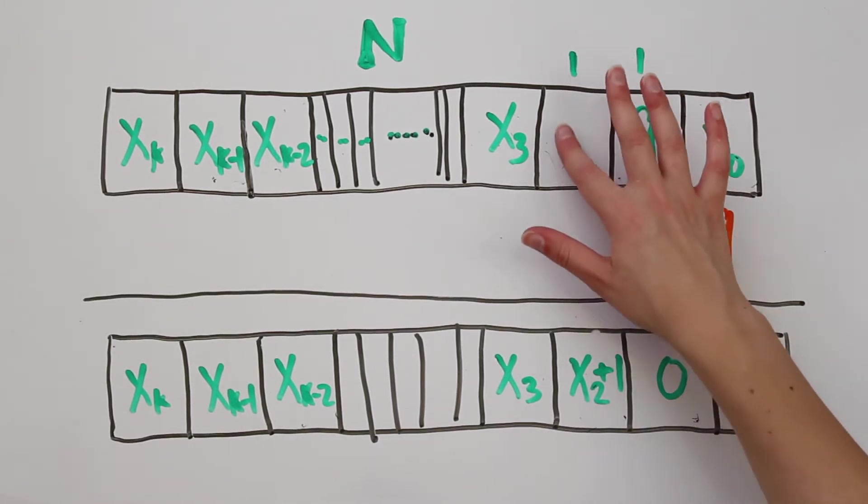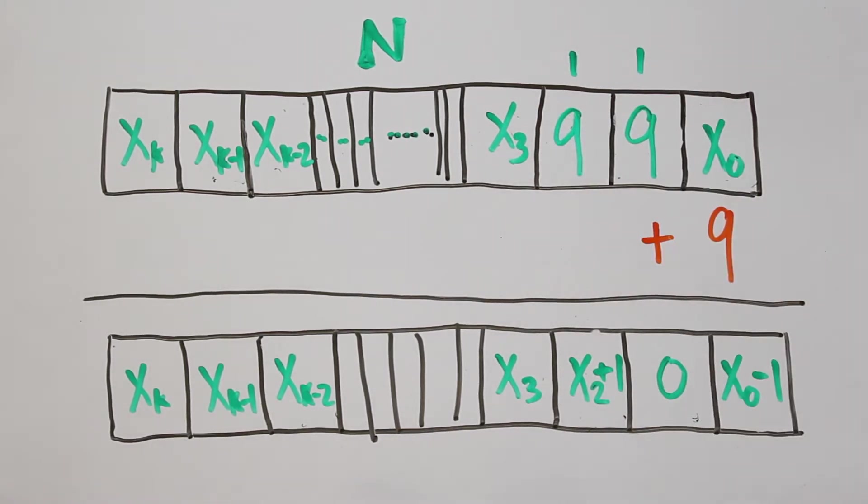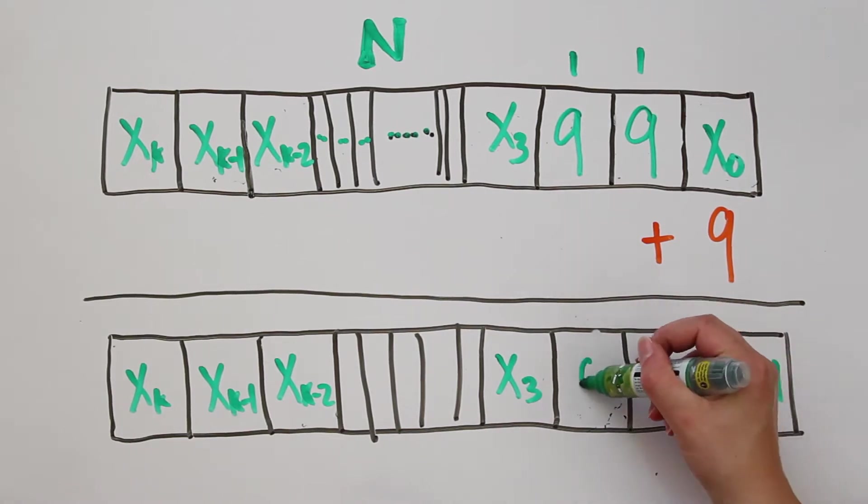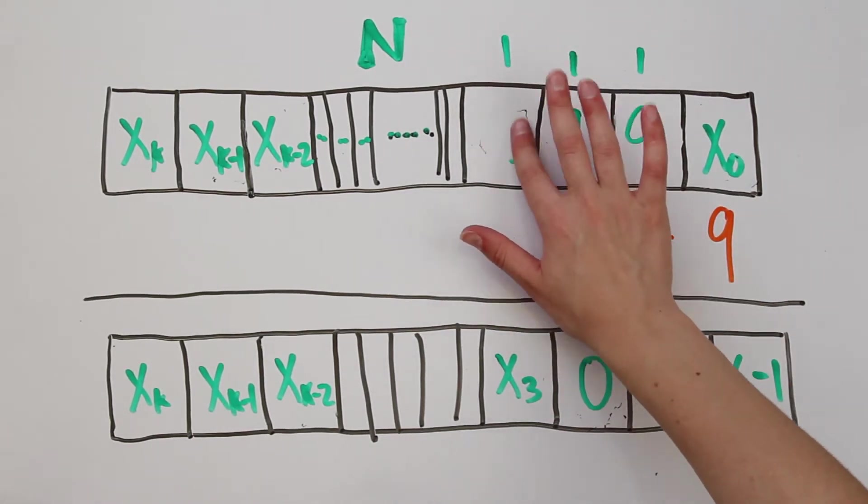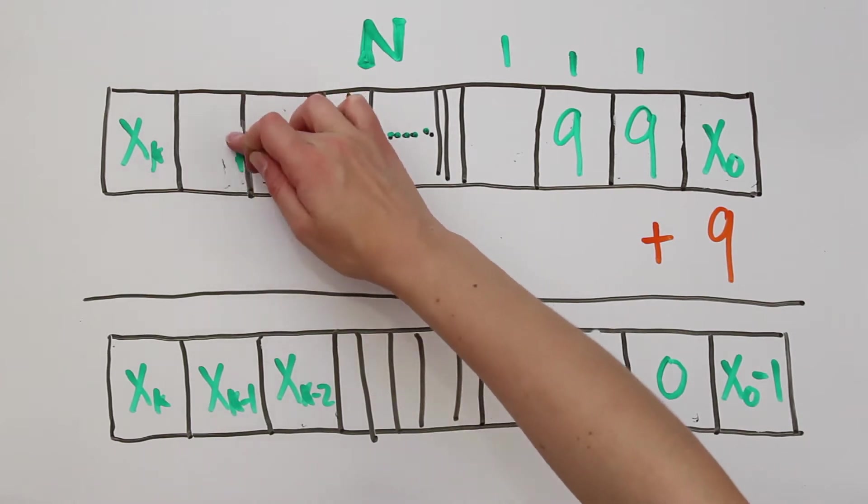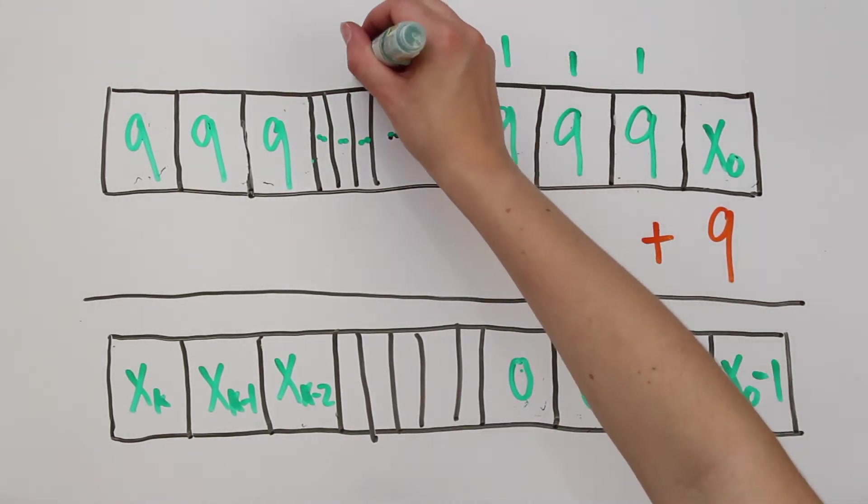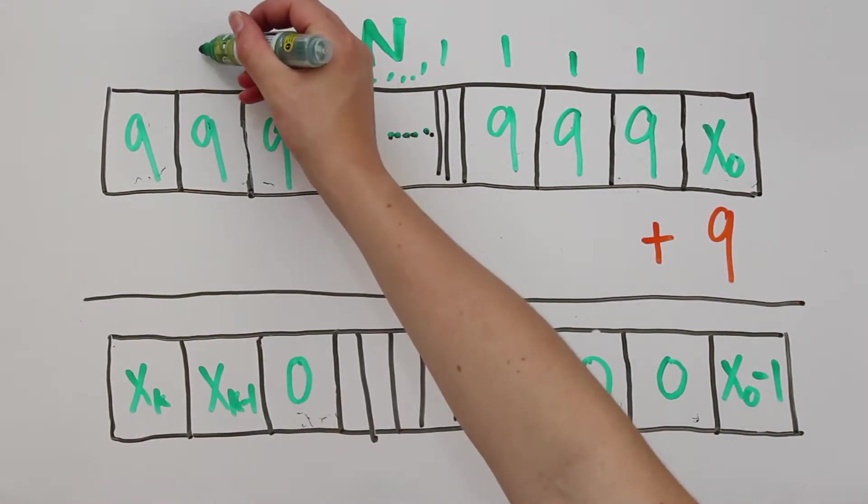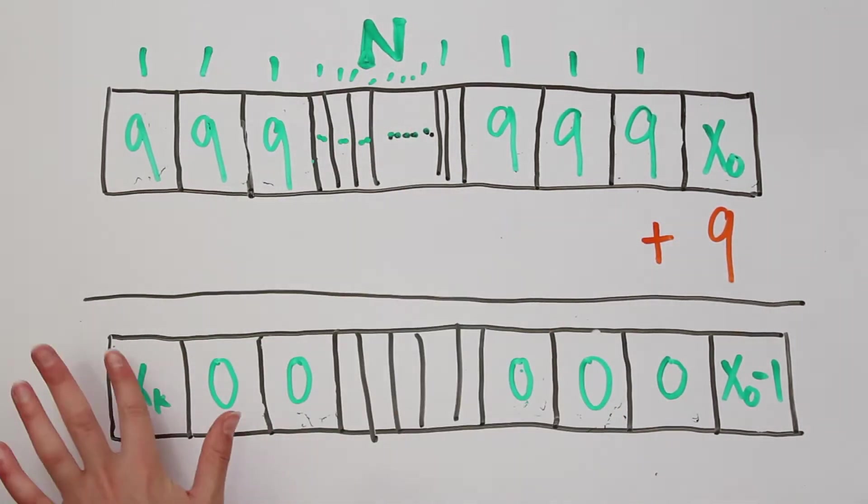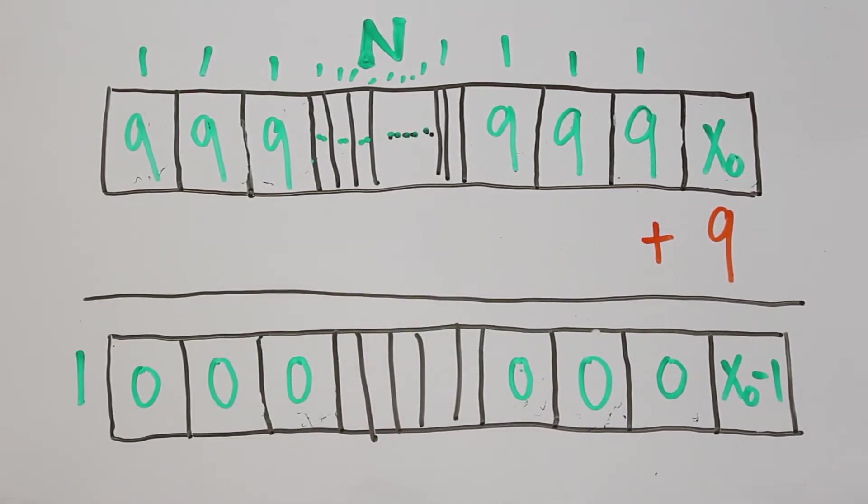Well, you might complain again and point out that the 100's place might be a 9. But then we do the same thing. The 100's place is now 0, and we increase the 1000's place by 1. In general, if there are some amount of consecutive 9's in the digits to the left of the 1's place, they will all turn to 0 and the next non-9 digit will increase by 1.